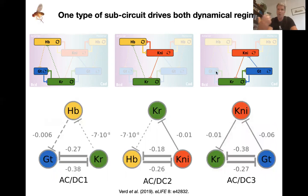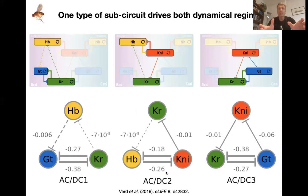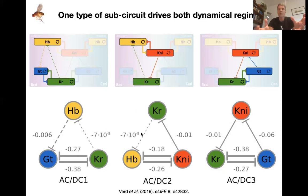These sub-circuits are very familiar — it's the ACDC sub-circuit. We named them ACDC1, ACDC2, and ACDC3. We can analyze them mathematically because they're simpler than the whole system. ACDC1 is in a mode where positive feedback dominates, creating switch-like behavior. The posterior circuit is in a mode where negative feedback dominates — an oscillatory regime. The middle one has a bifurcation and produces both switch-like and oscillatory behavior. Notably, they all have the same structure but do different things. Structure does not determine function — we need dynamical approaches to dissect networks, not structure alone.